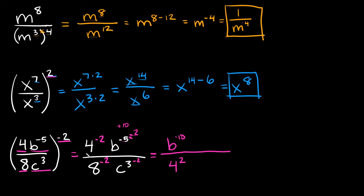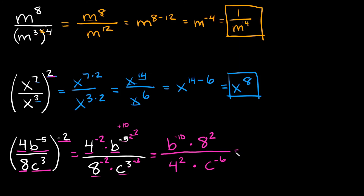Now let's simplify the bottom terms. We have 8 raised to the negative 2 — whenever you have a negative exponent, throw it to the opposite side and make it positive, so 8 squared moves to the numerator. For c cubed raised to the negative 2: 3 times negative 2 is negative 6, giving us c to the negative 6.